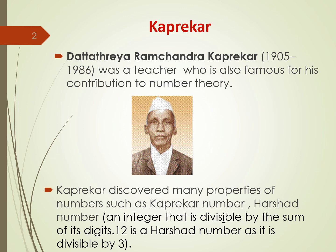He gave the name Harshad, which means joy in Sanskrit. It is an integer that is divisible by the sum of its digits. For example, 12 is a Harshad number because it is divisible by 1 plus 2, which is 3, the sum of its digits. Whereas 16 is not a Harshad number — its digit sum is 7 and 16 is not divisible by 7. On the other hand, 18 is a Harshad number: 1 plus 8 equals 9, and 18 is divisible by 9.